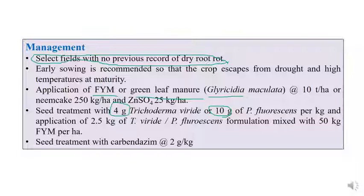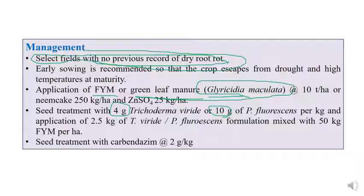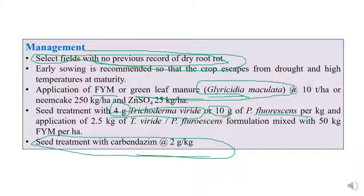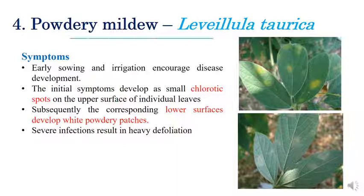For management of dry root rot: select fields with no previous record of dry root rot; apply farmyard manure and green leaf manure, especially Glyricidia at 10 tonnes per hectare; apply neem cake at 250 kilograms per hectare combined with zinc sulfate at 25 kilograms per hectare. Seed treatment with 4 grams Trichoderma viride or 10 grams Pseudomonas fluorescens per kilogram of seeds is recommended. Apply Trichoderma viride or Pseudomonas fluorescens at 2.5 kilograms with farmyard manure at 50 kilograms per hectare. Seed treatment with carbendazim at 2.2 grams per kilogram of seeds can also give relief.